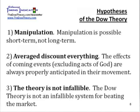Robert Rhea set out a few hypotheses that he said must be accepted without reservation if one is to use the theory successfully. One: manipulation is possible in day-to-day movements, but the primary trend can never be manipulated. Two: the averages discount everything — fluctuations of the daily closing prices afford a composite index of all the hopes, disappointments, and knowledge of everyone who knows anything of financial matters. The effects of coming events, excluding Acts of God, are always properly anticipated in their movement. Three: the theory is not infallible. Its successful use requires serious study, and the wish must never be allowed to father the thought.